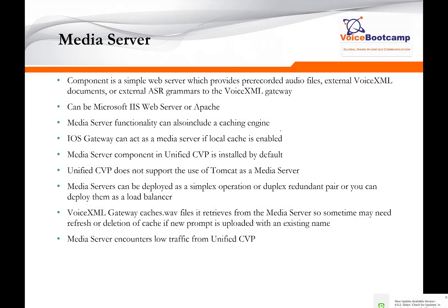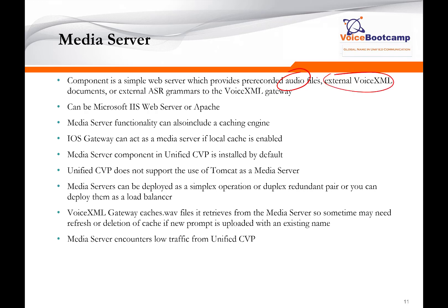The media server is a very simple web server — it runs IIS or Apache and hosts all your audio files, external VXML documents, or external ASR grammar files. You can use IIS or Apache web server. It is not recommended to use Tomcat for this. Media server functionality is also included in a cache engine. If you're using a Cisco IOS gateway, you can configure the gateway as a local cache engine so that once the first file is requested — say a welcome prompt — it contacts the media server the first time, then keeps that file in memory as a cache so subsequent calls invoke it from the router rather than calling the media server again.